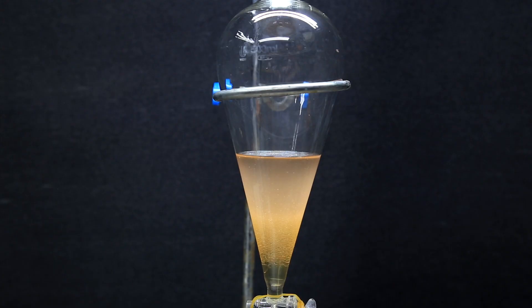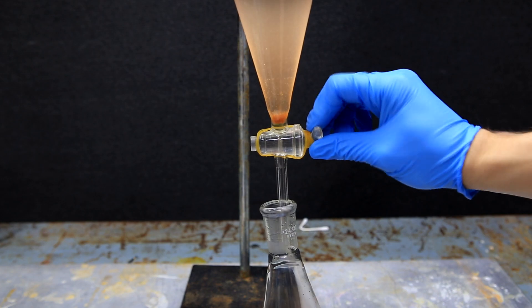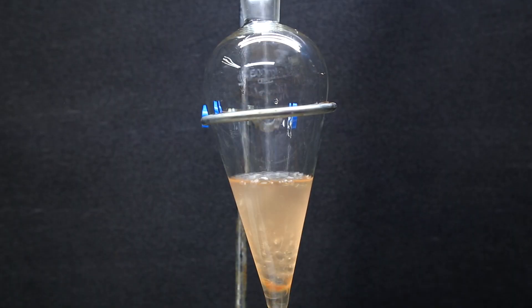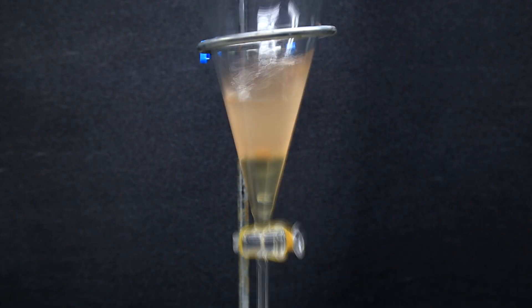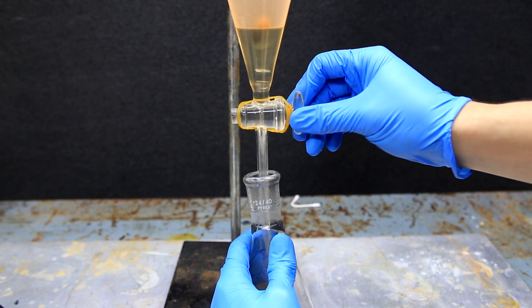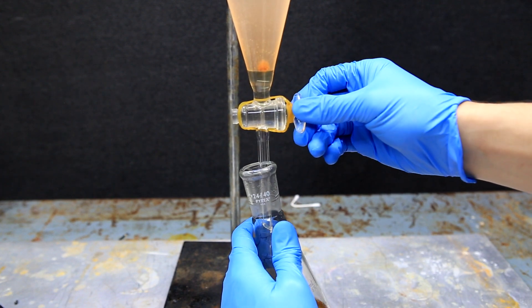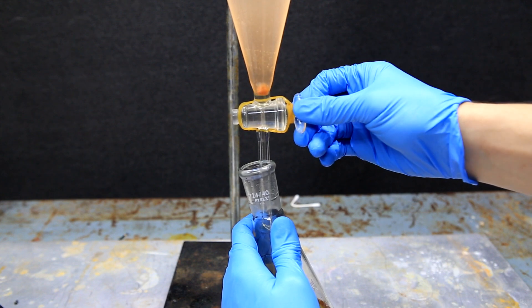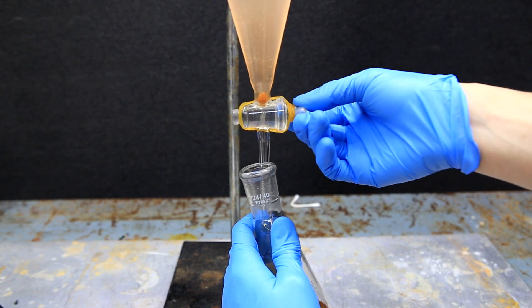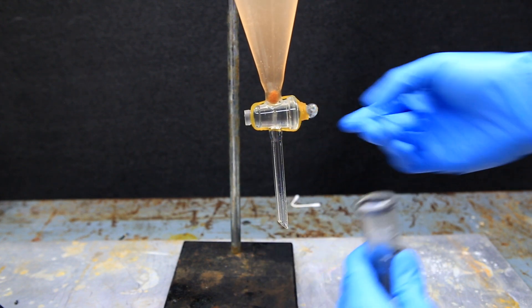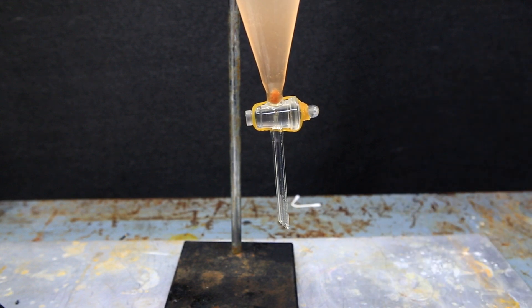The extraction was repeated two more times using 25 milliliters of dichloromethane each time. On the last washing, you'll notice that the DCM layer is only faintly yellow and the water layer is faintly pink. This is good because it indicates that the vast majority of the phenylhydrazine freebase has been extracted out.